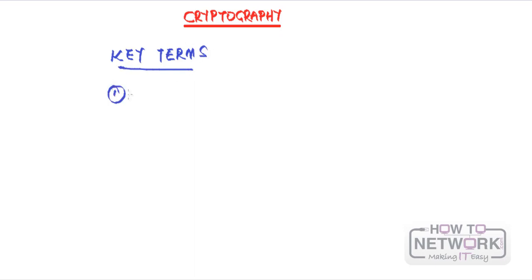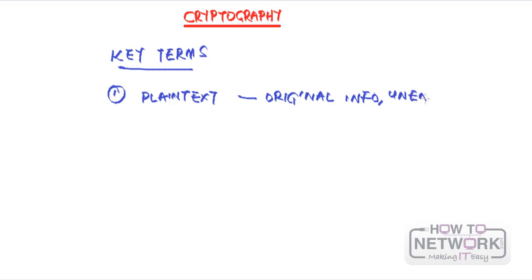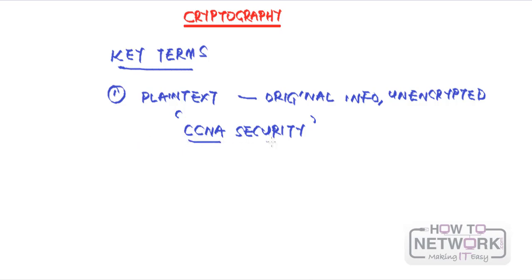The first key term is plain text. Plain text just means the original information in its unencrypted form. For example, 'CCNA security' — this is the information that we want to send. You can see it's readable. It doesn't have to be text; it could be an image file or anything. It's just the original information in its unencrypted form.